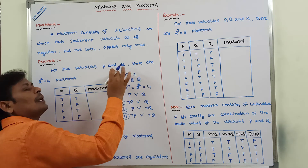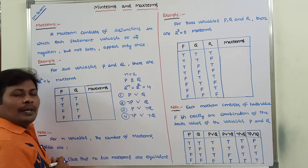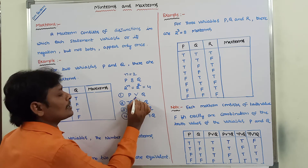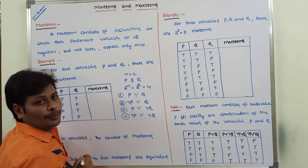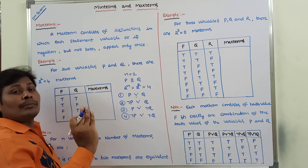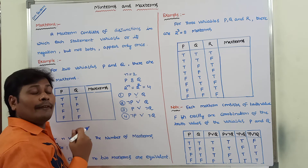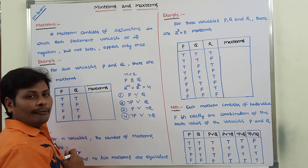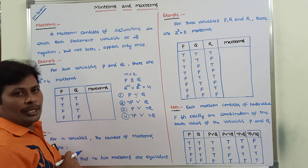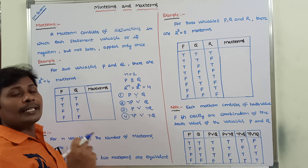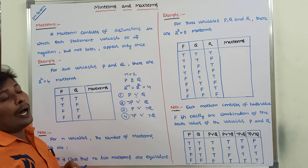For number of variables equal to 2, there are 4 max terms possible. A max term consists of disjunctions — that is the OR connective — while in the case of min terms, a min term consists of conjunctions. A max term consists of disjunctions in which a variable or its negation, but not both, appear only once. If the normal variable is there, there is no possibility of its negation in the same max term, and vice versa.